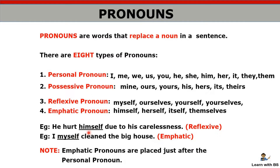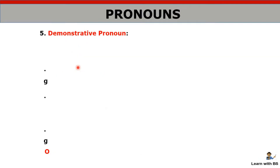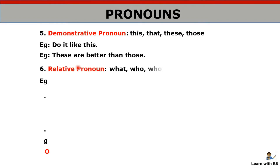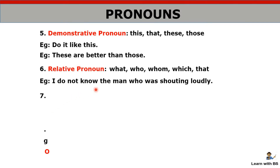So whenever you find a self-ending word in a sentence and are confused whether to write reflexive or emphatic — remember: if it comes immediately after the pronoun, it is emphatic; otherwise if it comes after the action word with the action reflecting back, it is reflexive. Next we have demonstrative pronouns: this, that, these, those. And relative pronouns, which show relation — for example: 'I don't know the man who was shouting loudly.' The word 'who' is showing a relation between the clauses, so it is a relative pronoun.